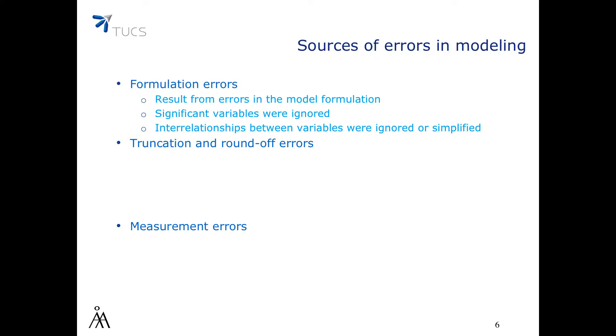Formulation errors may come from the fact that any model will ignore variables that have an influence over the behavior. This is done for many reasons: incomplete knowledge of all the relevant variables in the phenomenon under study, an explicit decision to focus on the main aspects of that phenomenon and ignore others even though their influence may not be negligible. Relations between variables may be ignored or simplified.